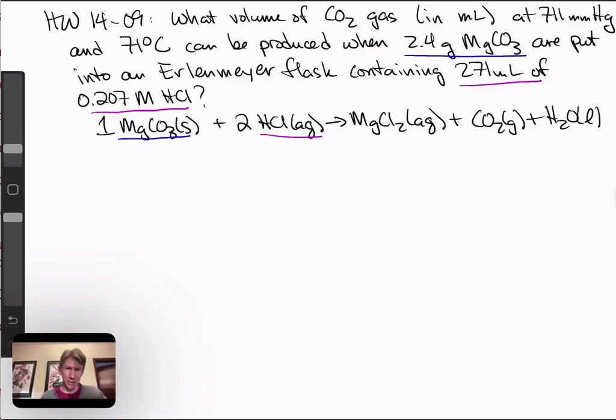So this is a limiting reactant problem. Since I'm still on pink, let's do the HCl first. We're going to have to take our milliliters of HCl and convert it into liters. That means we move the decimal point one, two, three places. I get 0.271 liters and we'll set up our picket fence. Liters, and this word 'of' here is usually mathematically translated into multiply by, and that's exactly what we're going to do here.